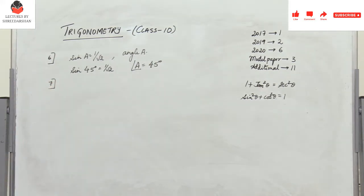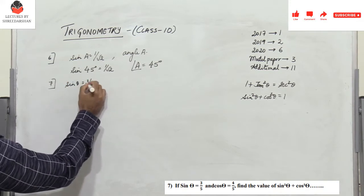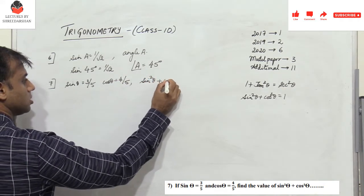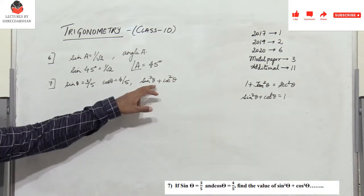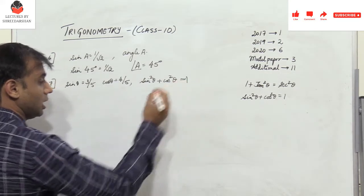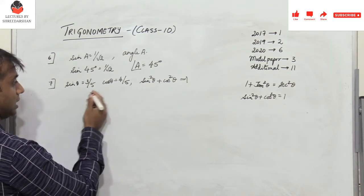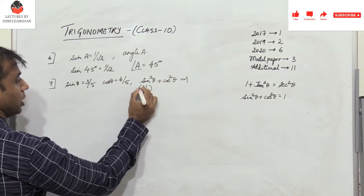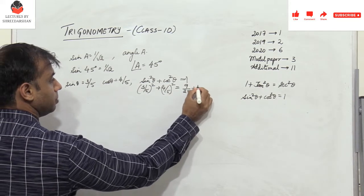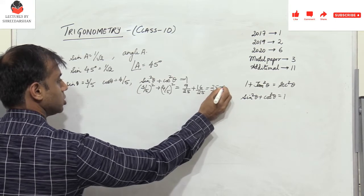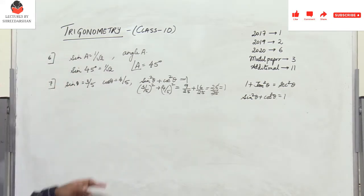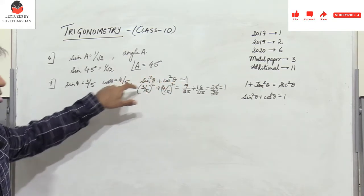Problem 7: given sinθ = 3/5 and cosθ = 4/5, find sin²θ + cos²θ. There is no need to calculate because we already know sin²θ + cos²θ = 1. But if you want to verify: (3/5)² + (4/5)² = 9/25 + 16/25 = 25/25 = 1. When such a problem appears in the exam, you can write the answer directly, but since marks are assigned you may need to substitute values.